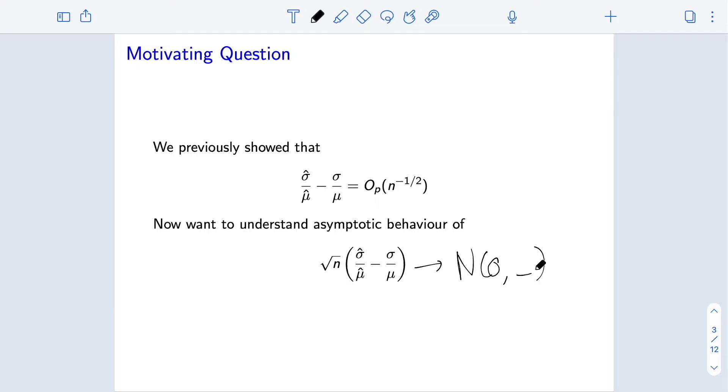As we will see, that turns out to be exactly the case. In fact, we will see that this estimator will be asymptotically linear for estimating this parameter, and the influence function will be a combination of the influence functions of sigma hat for estimating sigma and the influence function of mu hat for estimating mu.